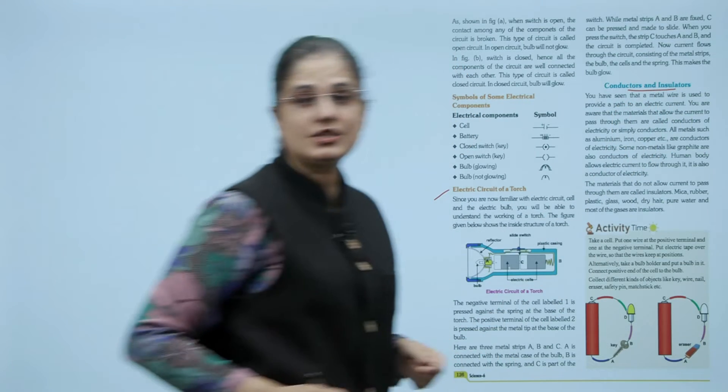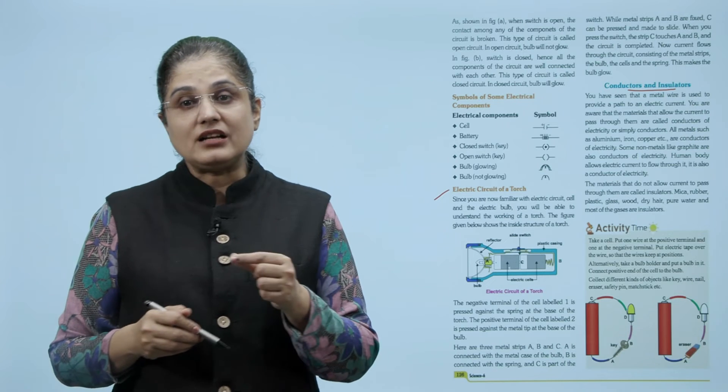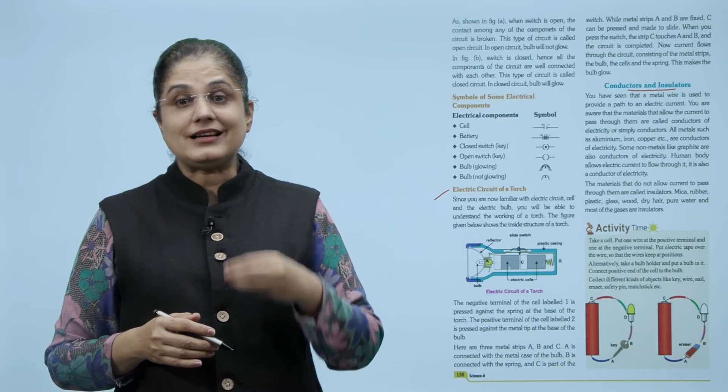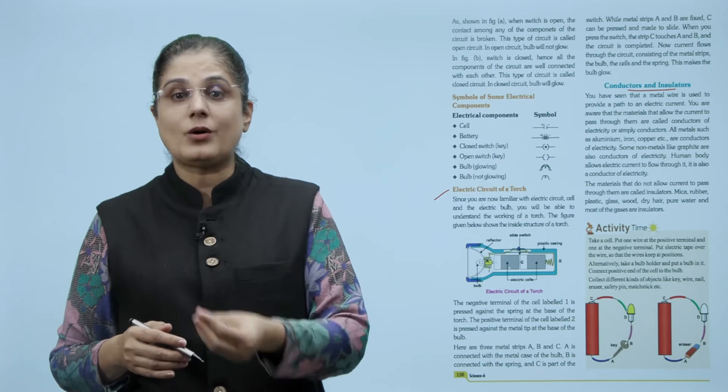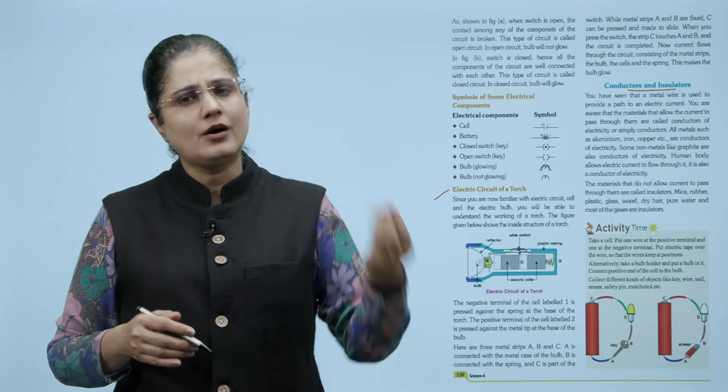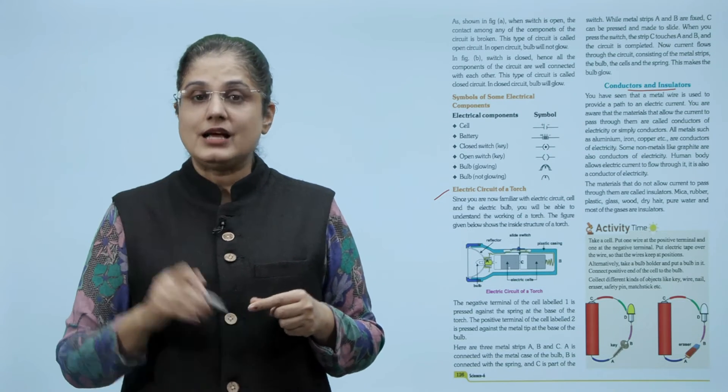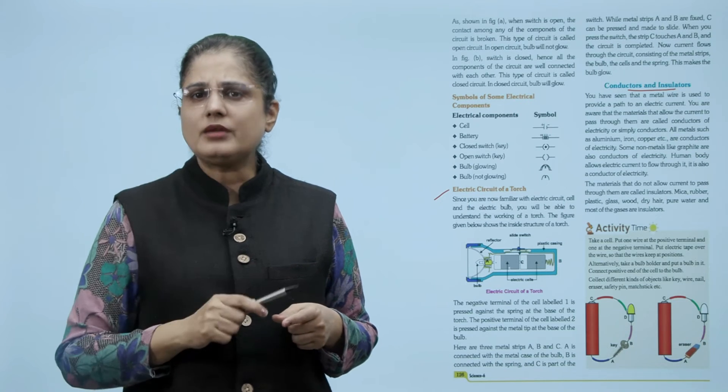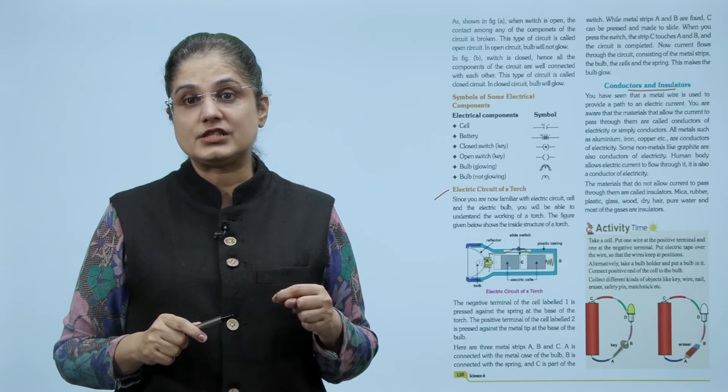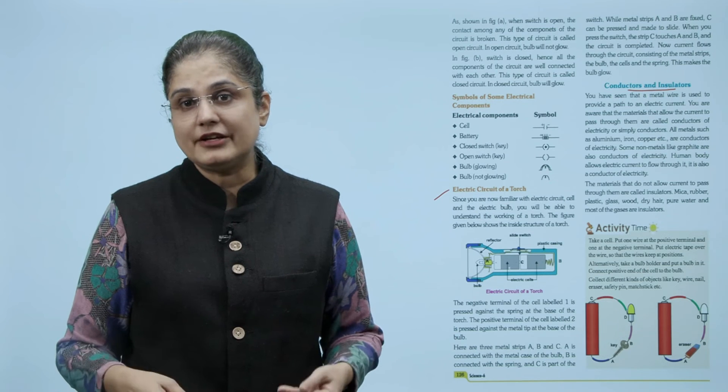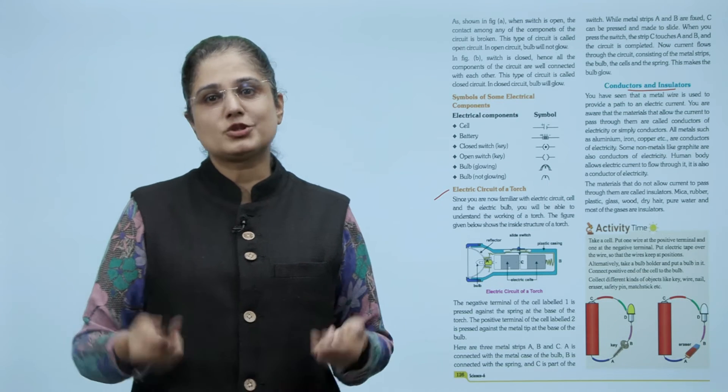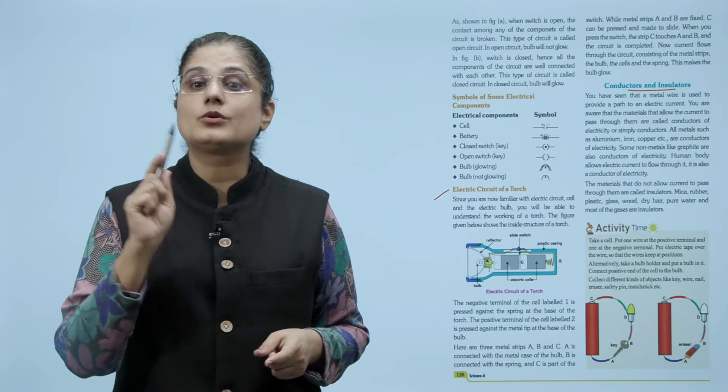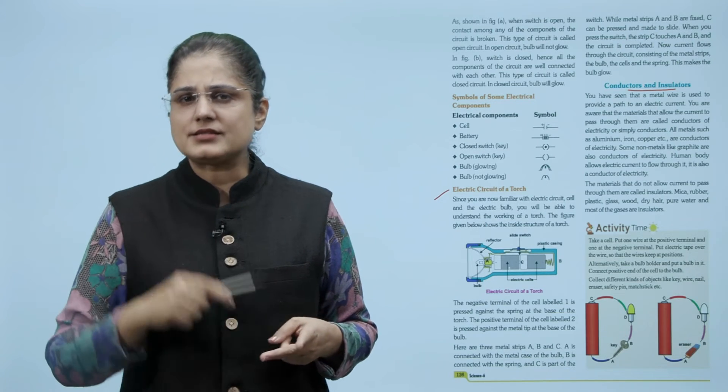So we now come to conductors and insulators. You have all seen that a metal wire is used to provide a path to an electric current. You are aware that the materials that allow the current to pass through them are called conductors of electricity or simply conductors. All metals such as aluminum, iron, copper are conductors of electricity. Some non-metals like graphite are also conductors of electricity. Human body allows electric current to flow through it so it is also a conductor of electricity. The materials that do not allow current to pass through them are called insulators.